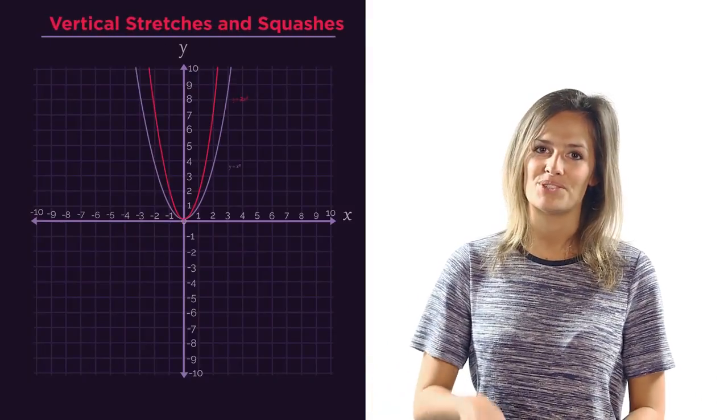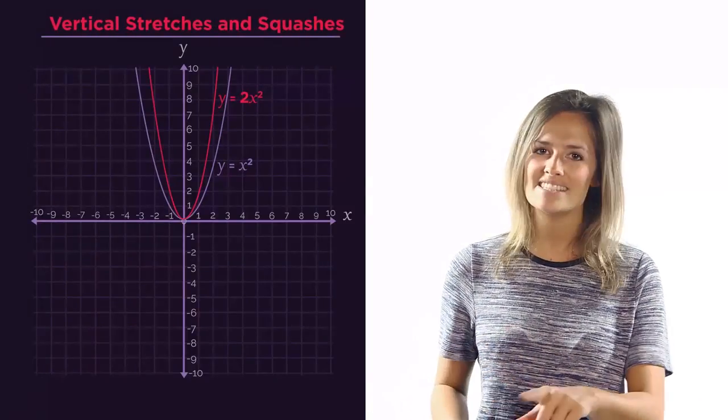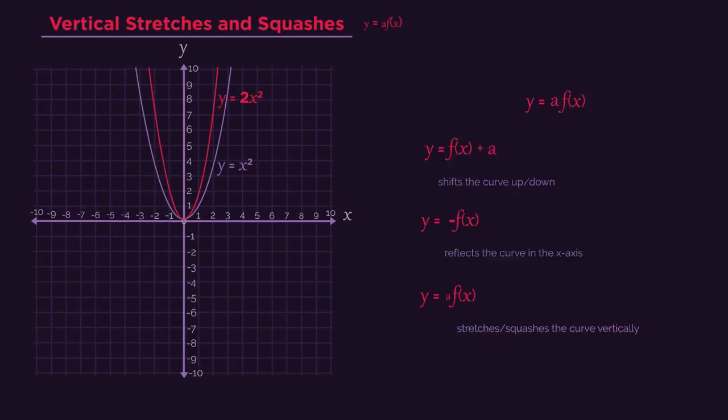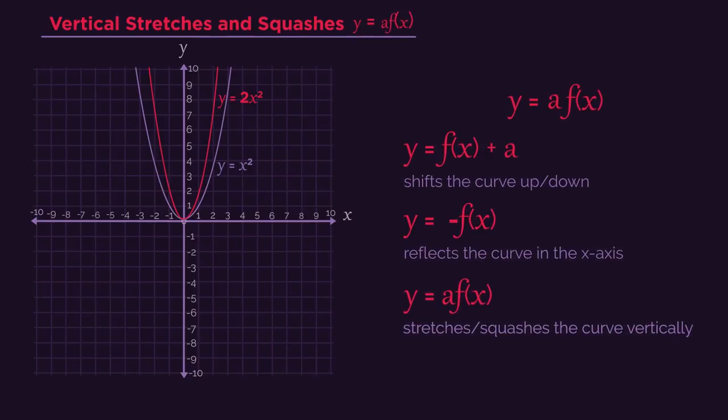Let's start with vertical stretches and squashes, as they're a little easier. As with all vertical transformations, we apply the transformation to the whole function, so the outside. See how the number goes here?